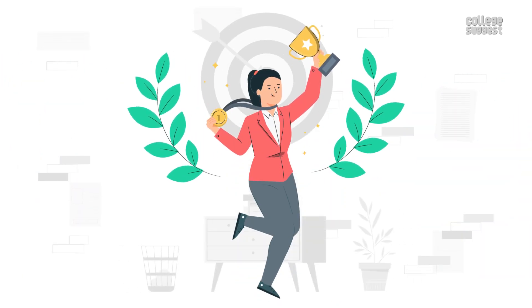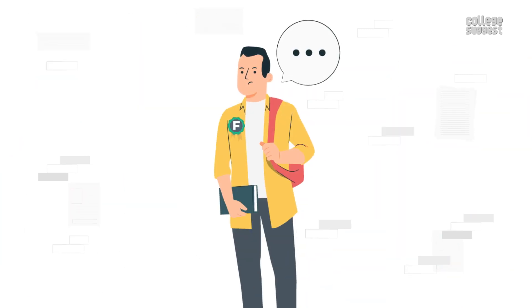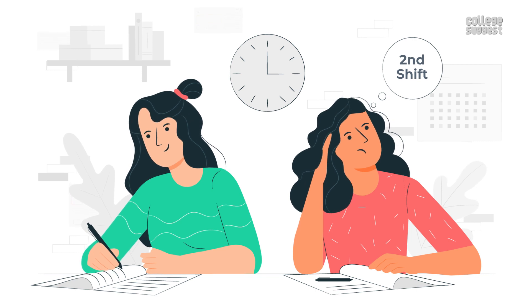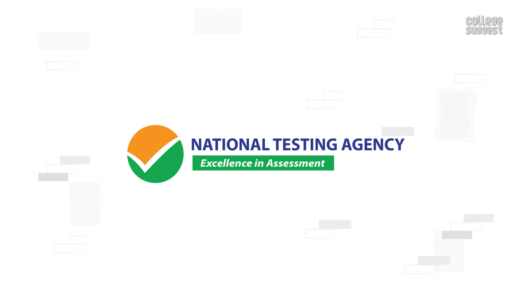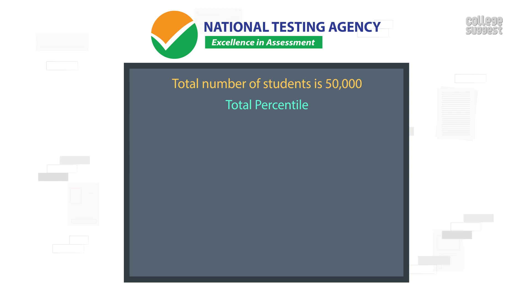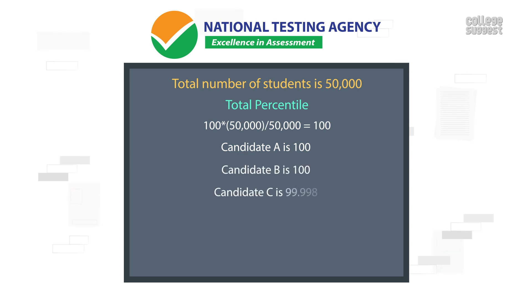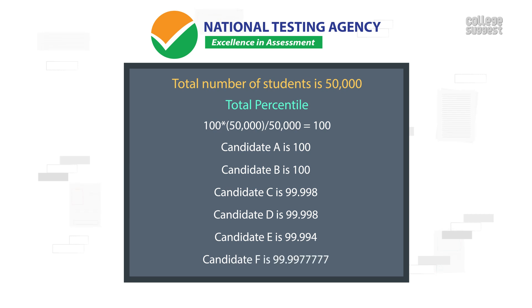If awards are categorized according to raw scores, then candidate F will be treated unfairly, as we have already assumed that the second shift question paper was more difficult than the first shift. Awarding the same rank as candidate E would also not be a good method — hence NTA has introduced the normalization method. Based on the formula, candidate A's total percentile equals 100 into 50,000 divided by 50,000, which equals 100. Candidate B is also 100; candidate C is 99.998; candidate D is 99.998; candidate E is 99.994; and candidate F is 99.9977777.